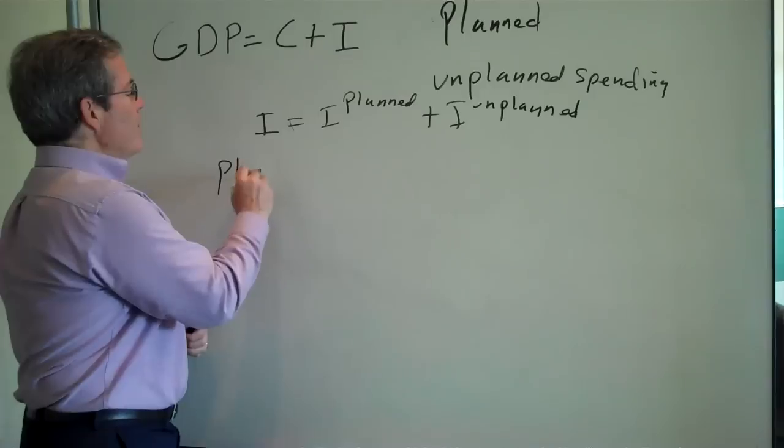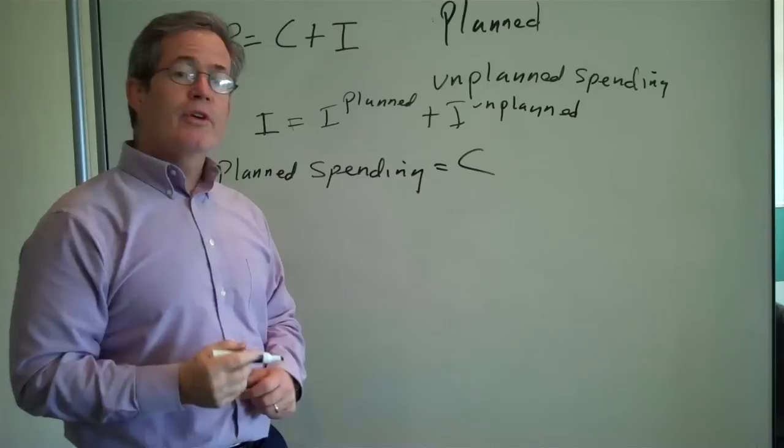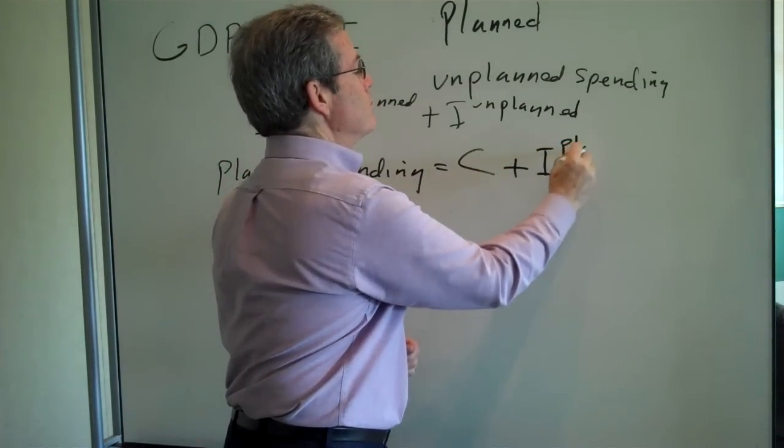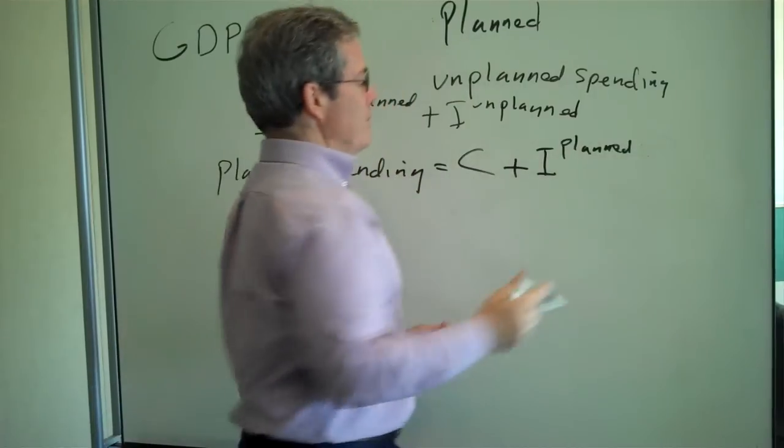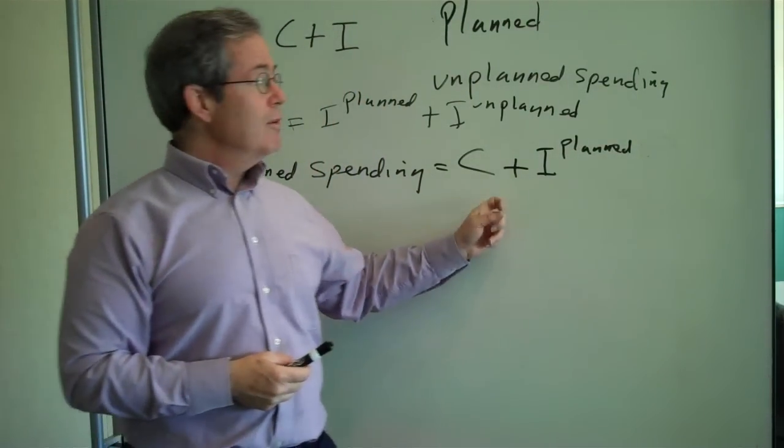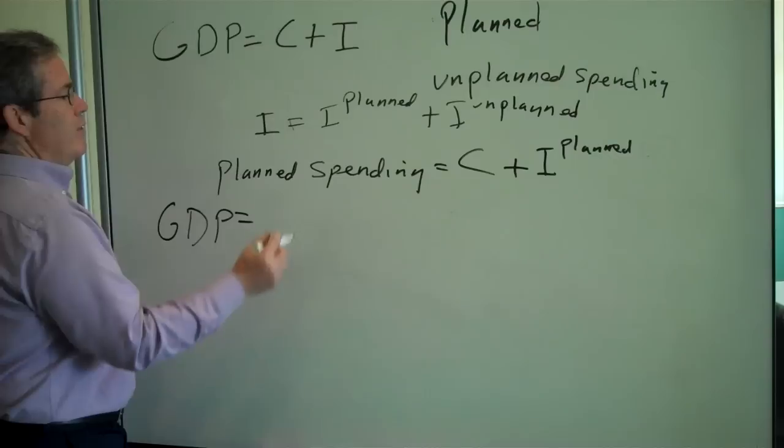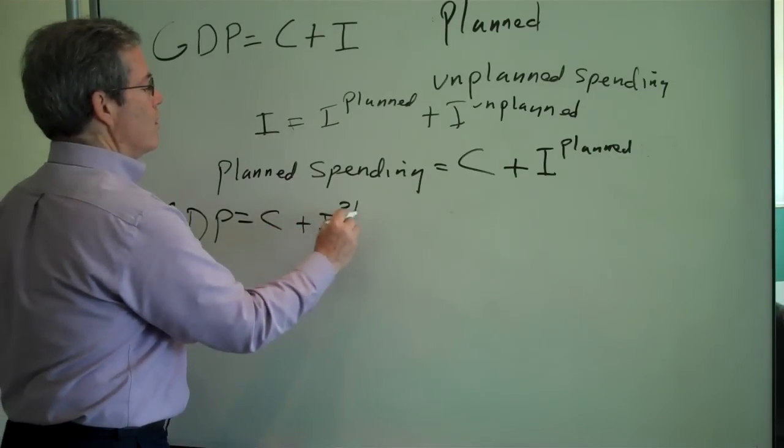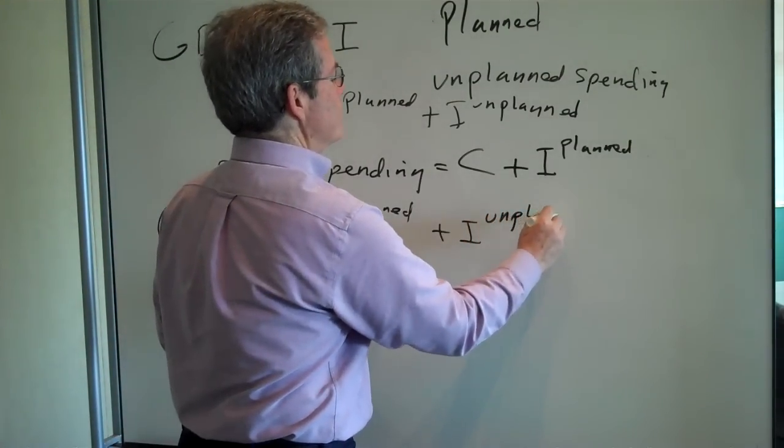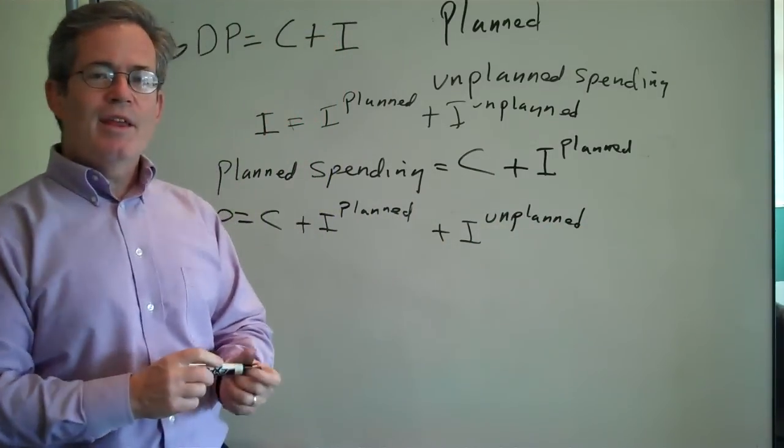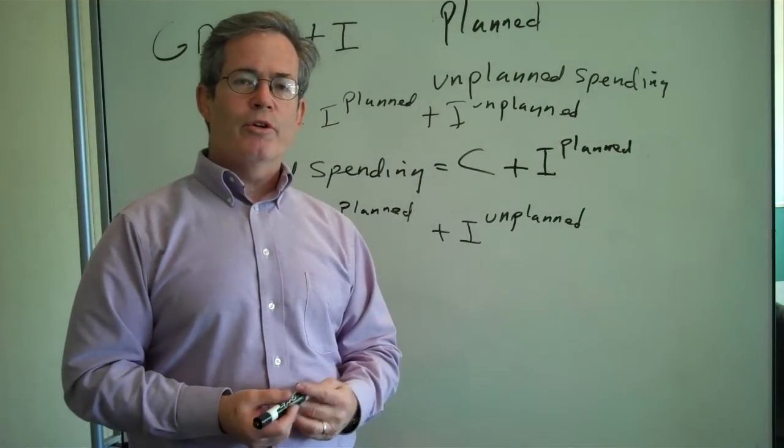So planned spending then is equal to consumption plus planned investment. And GDP is equal to consumption plus planned investment plus unplanned investment. That is all these extra inventories you might have to build up if you don't forecast the future accurately.